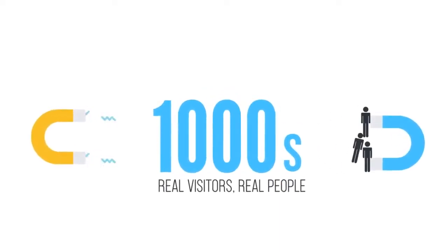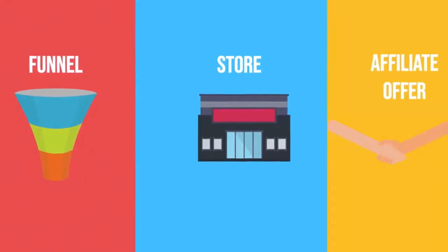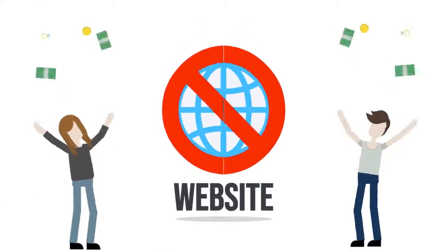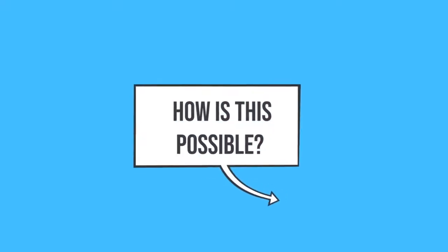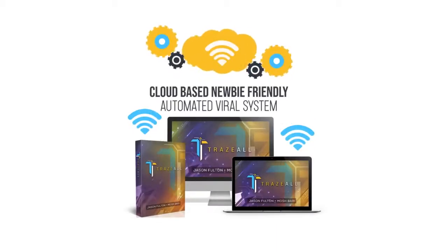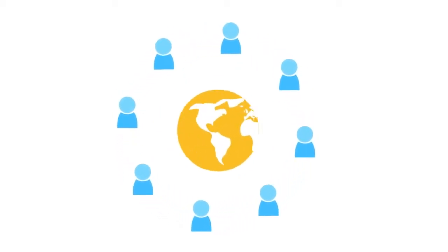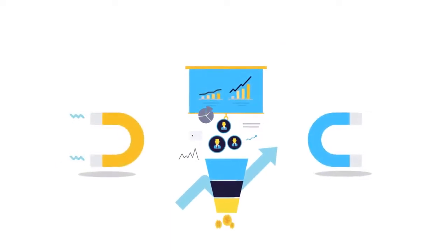Now you can drive thousands of real visitors to any website with just 60 seconds of work. And the best part is, you don't even need to have a website. You can drive traffic to any funnel, store or affiliate offer without owning a website and still make money with it. Introducing Trazl, a brand new cloud-based, newbie-friendly automated viral system that drives buyers on 100% autopilot using the power of viral referrals and social media to drive thousands of people to your site, fill it with traffic, and build you a massive email list at the same time.